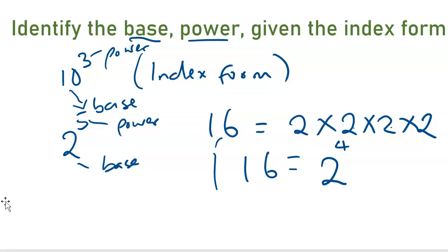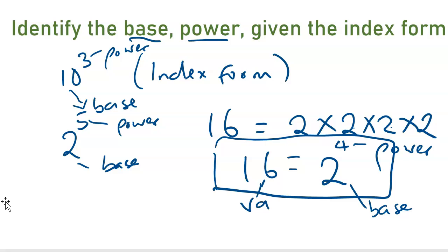Normally, when you have a value like this, 16 is equal to 2 to the power of 4. The 2 is the base, 4 is the power and the 16 is the value.